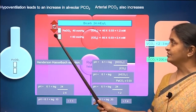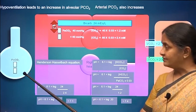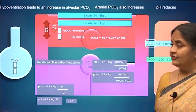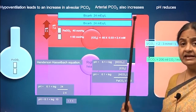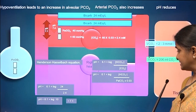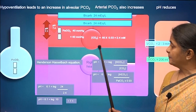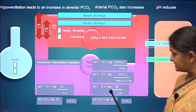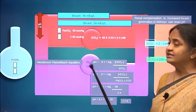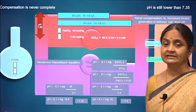An increase in arterial carbon dioxide will reduce arterial pH. A pH of 7.1 is very severe acidosis. If respiratory or ventilatory failure were to develop acutely, the resulting acidosis can even lead to death. If the reduction in ventilation happens gradually, the kidneys can generate additional bicarbonate to buffer fixed acids. When kidneys increase bicarbonate generation in response to reducing pH, the Henderson-Hasselbalch equation tells us that pH can even normalize — though renal compensation is never complete, and pH might be around 7.32: still acidic but not as severe as 7.1.